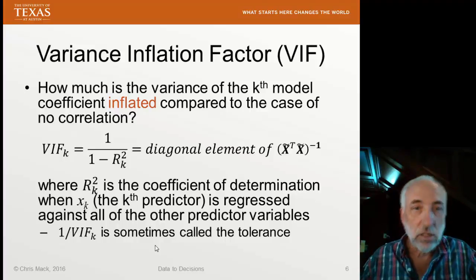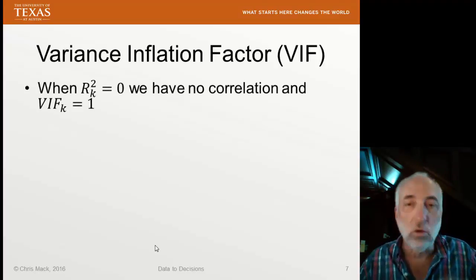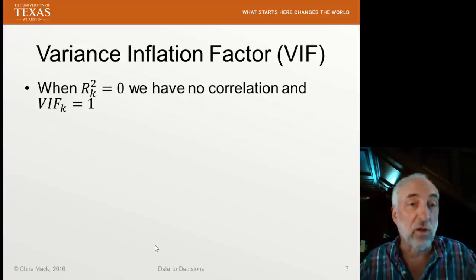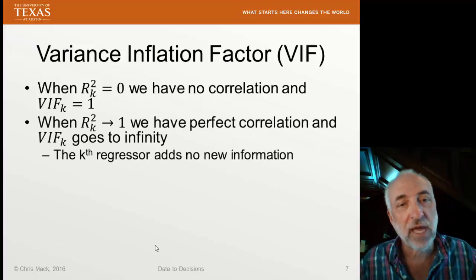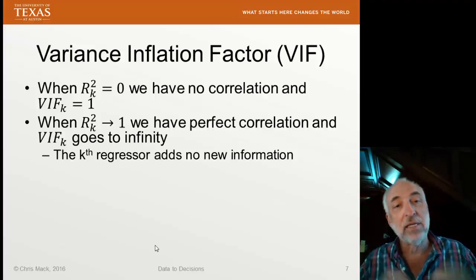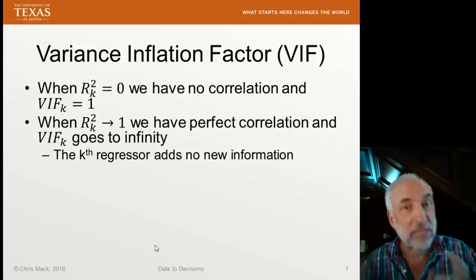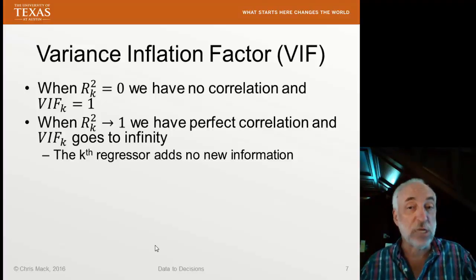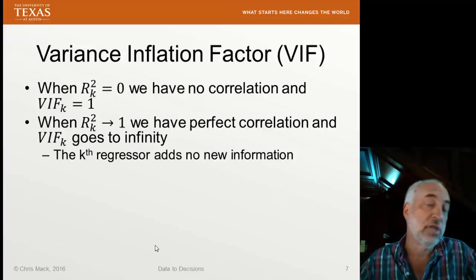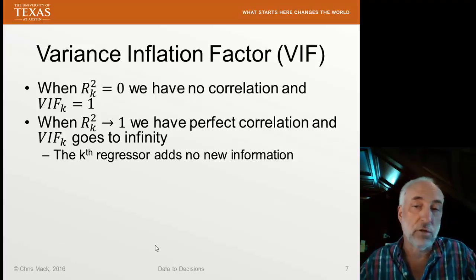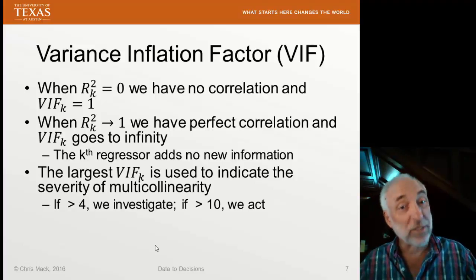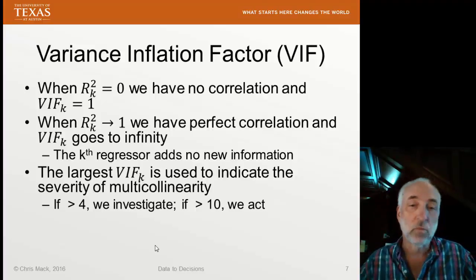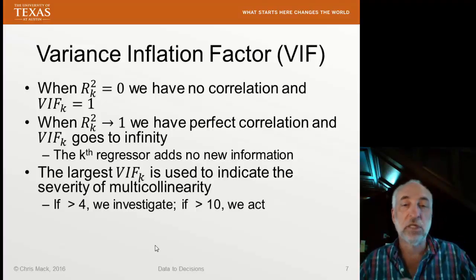When R-squared is 0, there is no correlation — the k-th predictor variable is not a function whatsoever of all the others, and the variance inflation factor is 1; there's no inflation. If we let R-squared of k go to 1, that tells us I can predict the k-th predictor variable perfectly given the information about all the other variables. In that case, the variance inflation factor goes to infinity, and this k-th regressor adds no new information. In between, this variance inflation factor describes how much the variance of the coefficient of the k-th predictor variable grows. The larger the VIF, the more severe the multicollinearity.